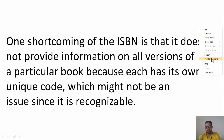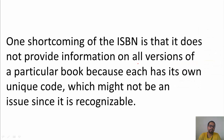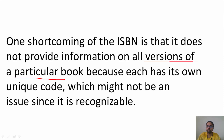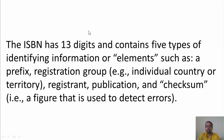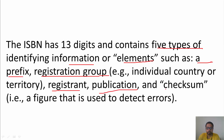ISBN stands for International Standard Book Number. Every book is given a universal ID, which makes it easy for bookstores, libraries, readers, and publishers to find and refer to your book. One shortcoming of ISBN is that it does not provide information on all versions or editions of a particular book — a new edition may have its own unique code.